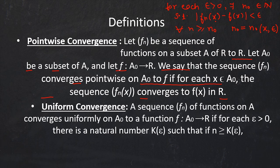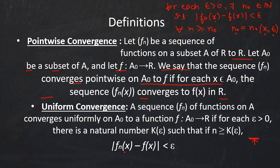The second category is uniform convergence. In uniform convergence, a sequence fn of functions on A converges uniformly on A₀ to a function f if for each epsilon greater than 0 there is a natural number k(epsilon) such that if n is greater than or equal to k(epsilon), |fn(x) − f(x)| < epsilon. The difference between pointwise and uniform convergence: in pointwise convergence N₀ depends on x and epsilon, whereas in uniform convergence k(epsilon) is independent of the point chosen but depends only on epsilon.